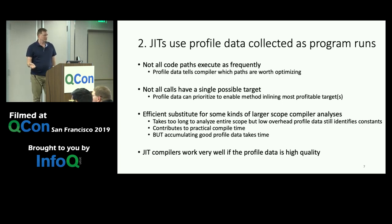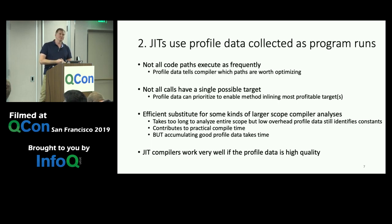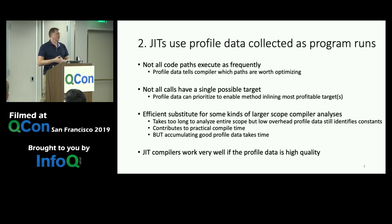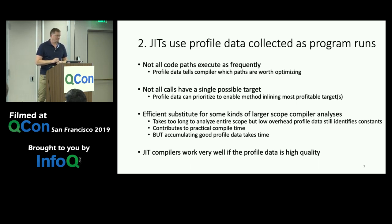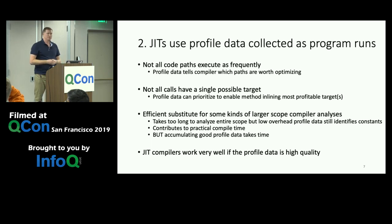JITs also use profile data while the program is running. Not all code paths execute equally frequently, so profile data tells the compiler which paths to focus on. The simplest example: you don't have to compile every method. If a method rarely executes, you can run it in the interpreter. But something called frequently should be compiled, because you get a big benefit from native code. Profile data can also help prioritize inlining even for megamorphic calls.